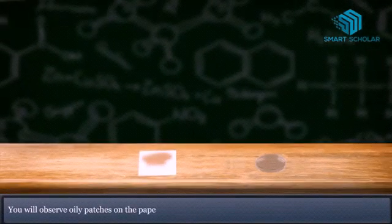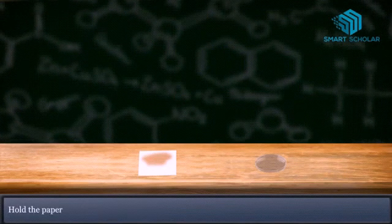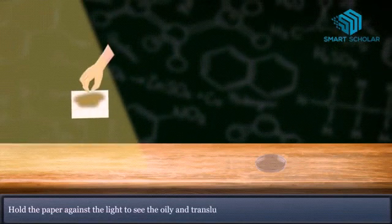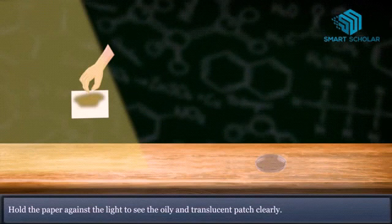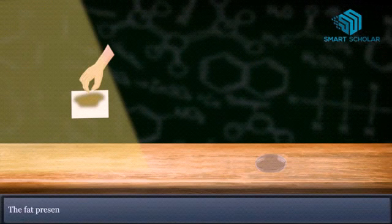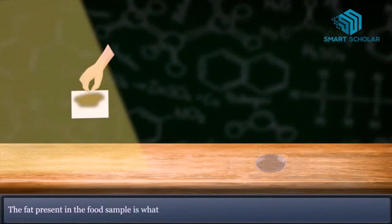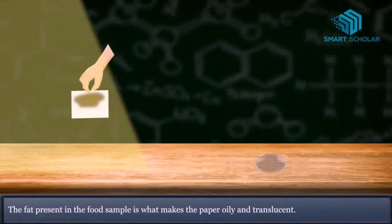Let it dry in the presence of sunlight or in front of a bulb. You may even take only oil and apply it on the paper and dry it in the light. You can see the same oily patch. The fat present in the food sample is what makes the paper oily.